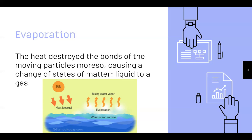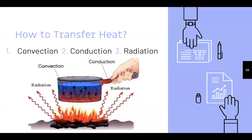How do we transfer heat? There are three different ways: convection, conduction, and radiation. In the image you can see all three: radiation from the fire heating the water, conduction from the handle, and convection from the water stirring around. That picture is very helpful for understanding all three.